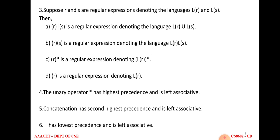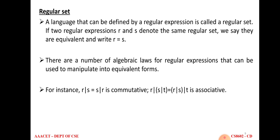The unary operator star (*) has the highest precedence or priority in regular expressions; concatenation is second priority; and the union operator (|) has the lowest precedence. What is a regular set? If a language can be defined by any regular expression, then it is called a regular set. If two regular expressions r and s denote the same regular set, they are equivalent: r = s. Regular expressions satisfy commutative law (r·s = s·r) and associative law (r·(s·t) = (r·s)·t) for concatenation.